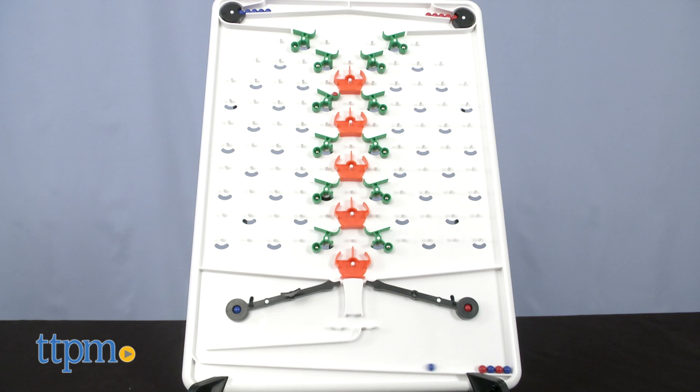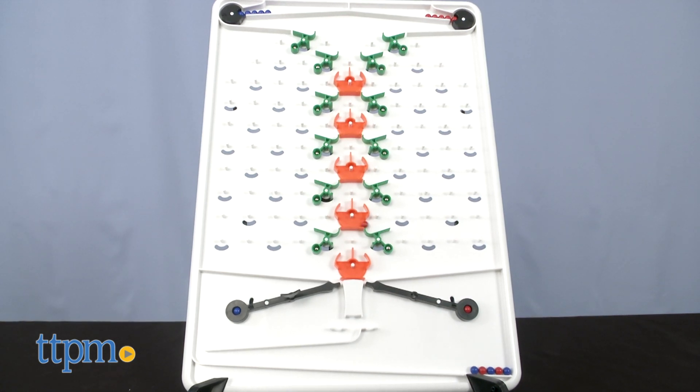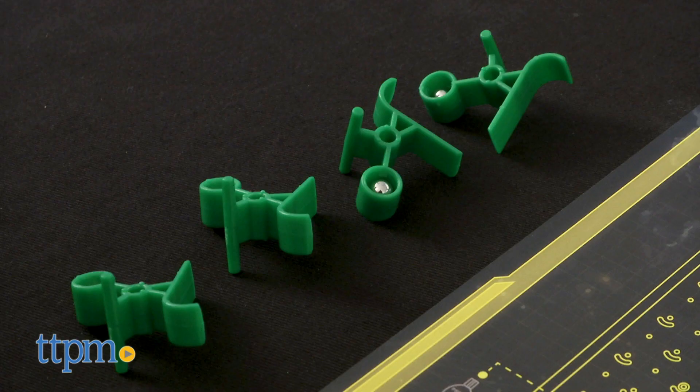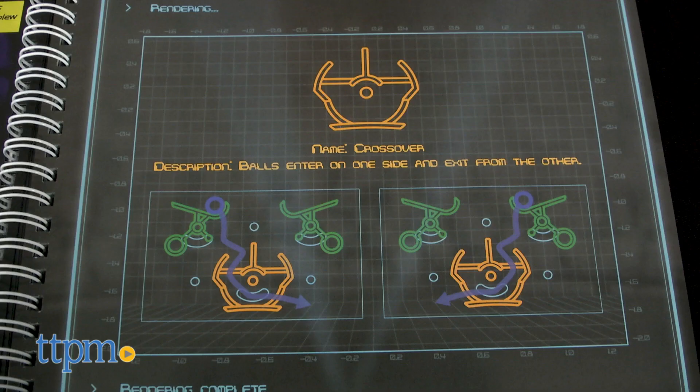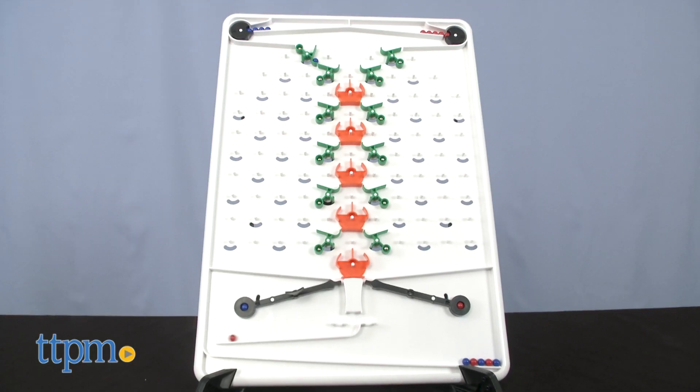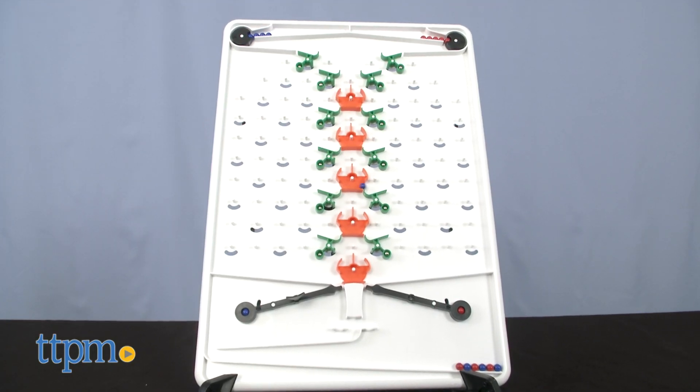The players add logic by putting six different types of parts onto the board. The ramp directs balls in one direction, either to the left or to the right. The crossover lets marbles cross over one another, going in one side and exiting out the opposite side.